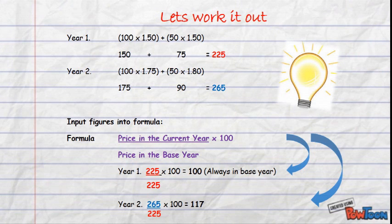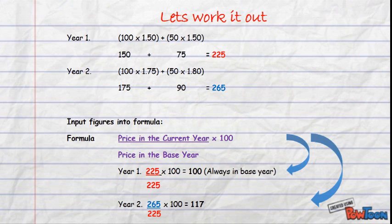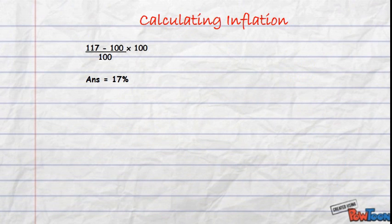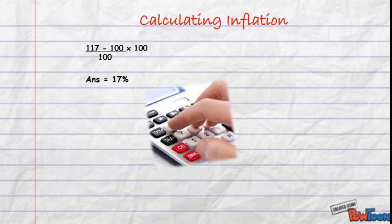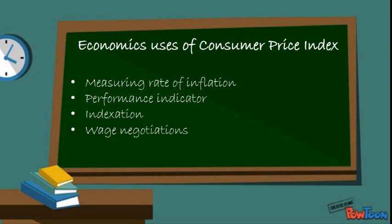The base year should always equate to 100. For year 2, we substitute in the figures: the current year, 265, and once again we substitute 225 for our base year, multiplied by 100. This provides an answer of 117. In order to calculate the rate of inflation based on these two products, we substitute: 117 minus 100, divided by the base year which is 100, multiplied by 100. This provides an answer of 17%.